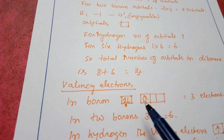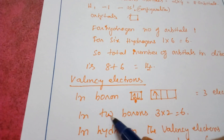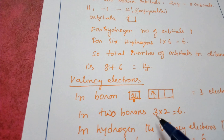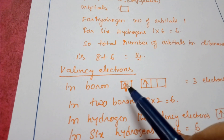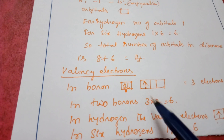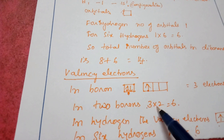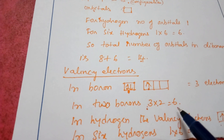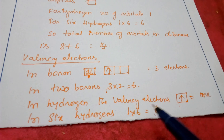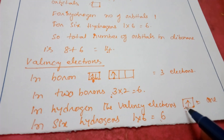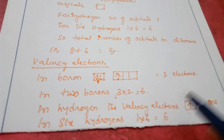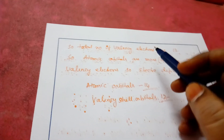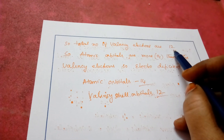With 3 valence electrons per boron and 2 boron atoms, that gives 3 × 2 = 6 valence electrons from boron. For hydrogen, there is only 1 valence electron per atom, and there are 6 hydrogen atoms, so 6 × 1 = 6. The total number of valence electrons in diborane is 6 + 6 = 12.